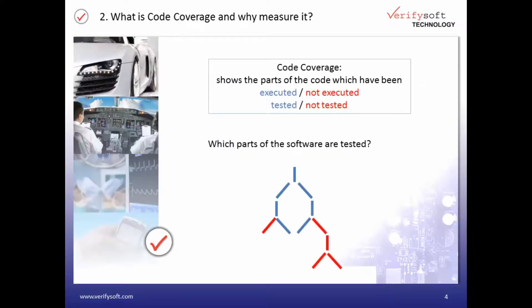Code coverage shows for all parts of your code whether they have been tested or not. In this picture the blue branches have already been tested and the red ones not yet. To achieve 100% test coverage we need to test the red parts of the code as well.